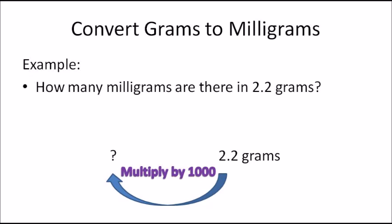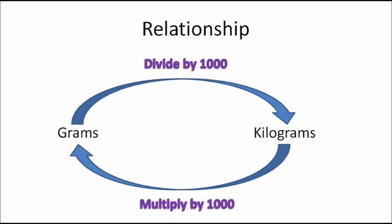Now let's look at grams and kilograms. If you have a weight in grams and need to convert to kilograms, you divide by 1000, because 1000 grams makes one kilogram. If you have a measurement in kilograms and need to convert to grams, you multiply by 1000, because kilograms is the larger unit.